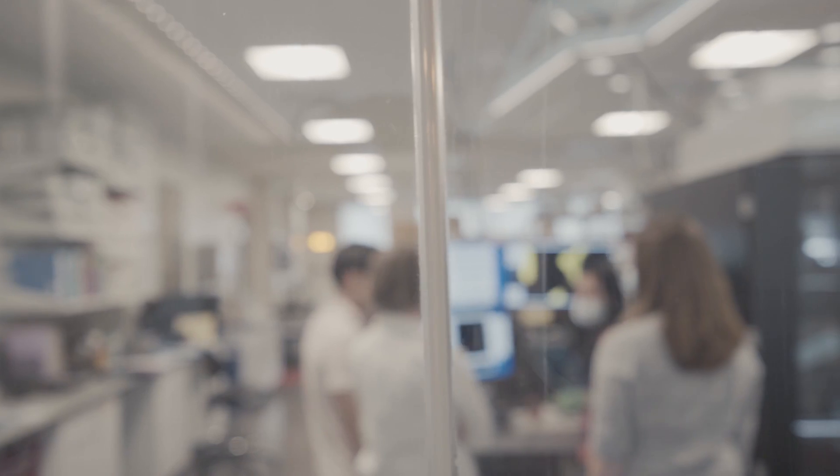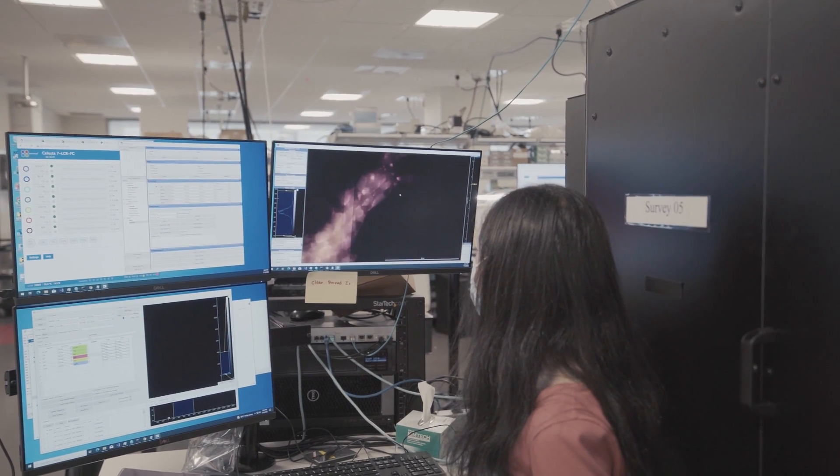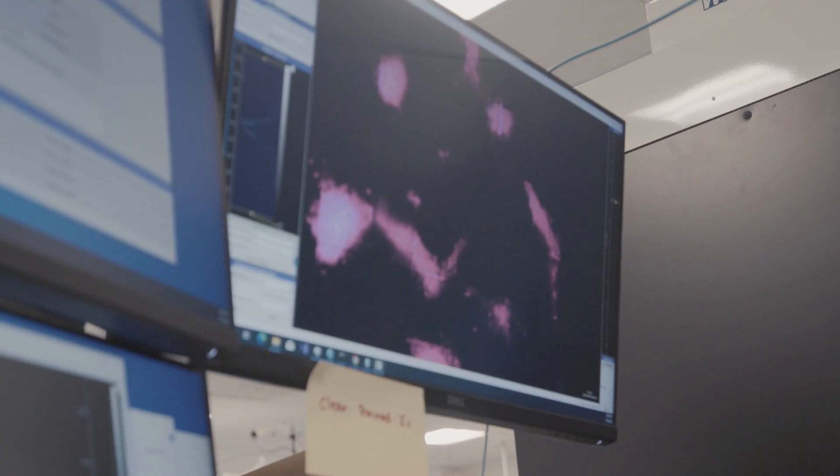If one looks in any other organ, diseases are typically diseases of particular types of cells in those organs. There's every reason to believe that this is the case in the brain as well. We now have the tools to finally look at this level of resolution and try to address that very question: What kinds of cells are affected by disease or are causal for a disease?